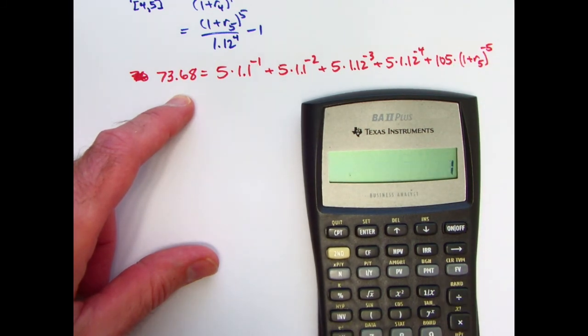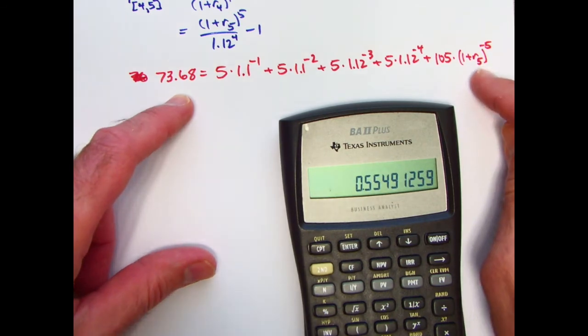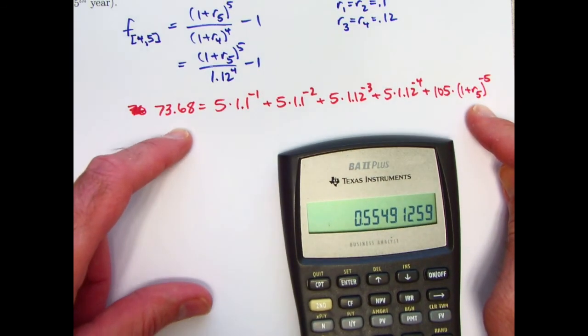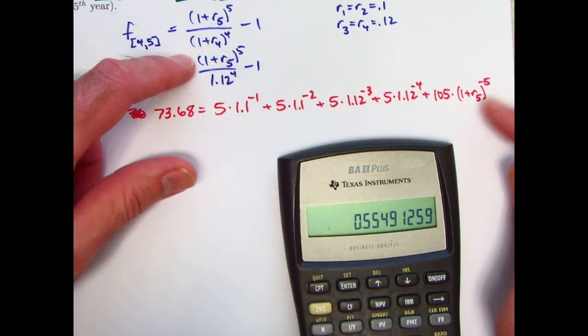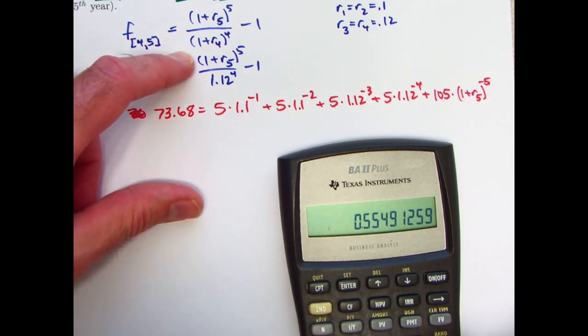Divide this by 105. And this would equal then 1 plus R5 to the negative 5 power. I'm almost done here. I want to now take its reciprocal to get 1 plus R5 to the positive 5.